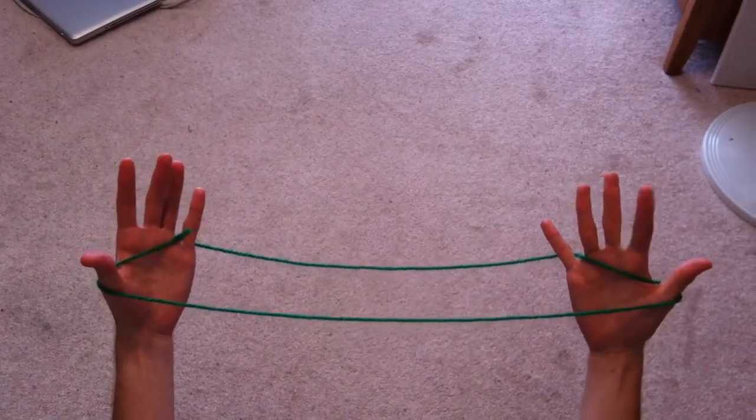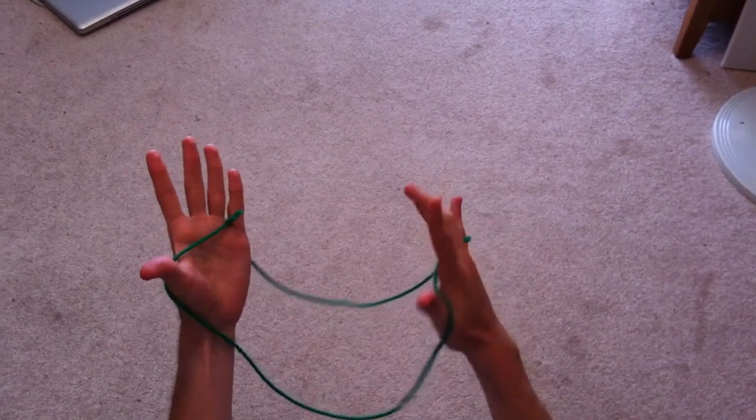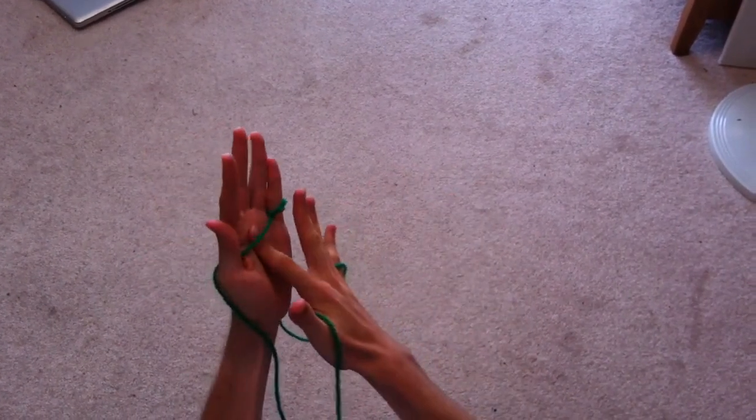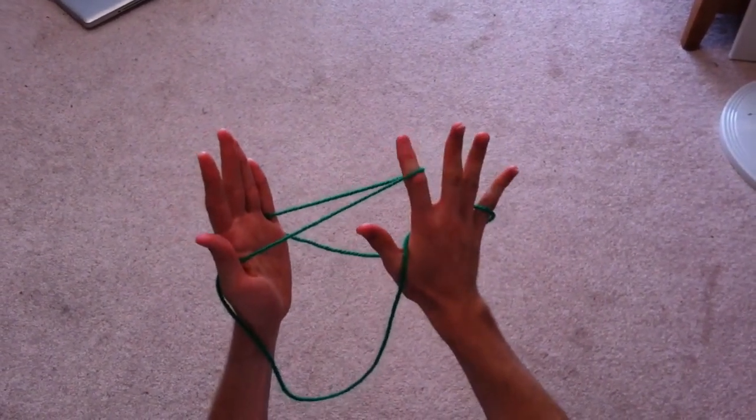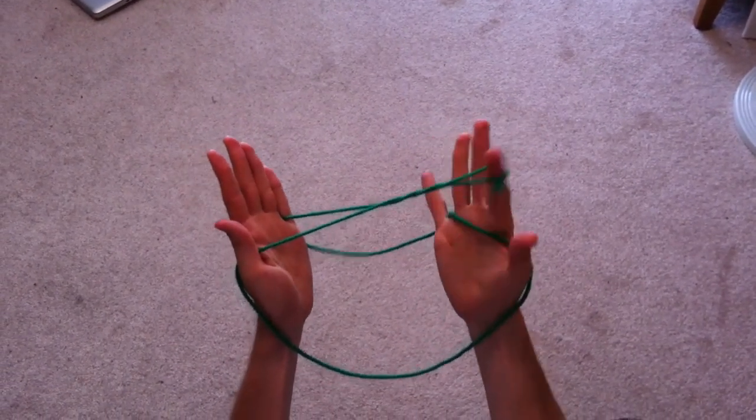This time, when your right pointer comes into your left palm of string, you're going to be twisting it twice, going away from you. So pull out the string and twist it away and then towards your body and up, away and then towards your body and up.